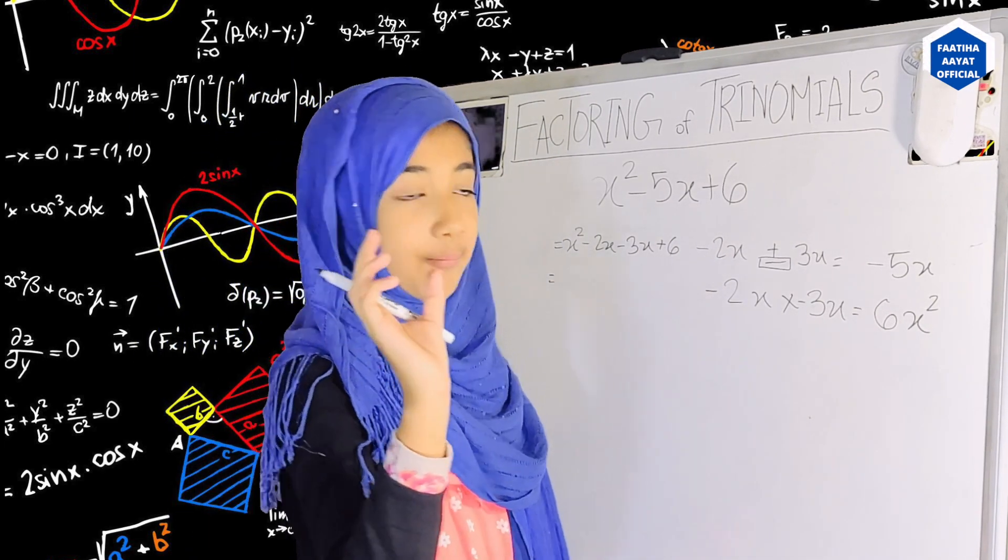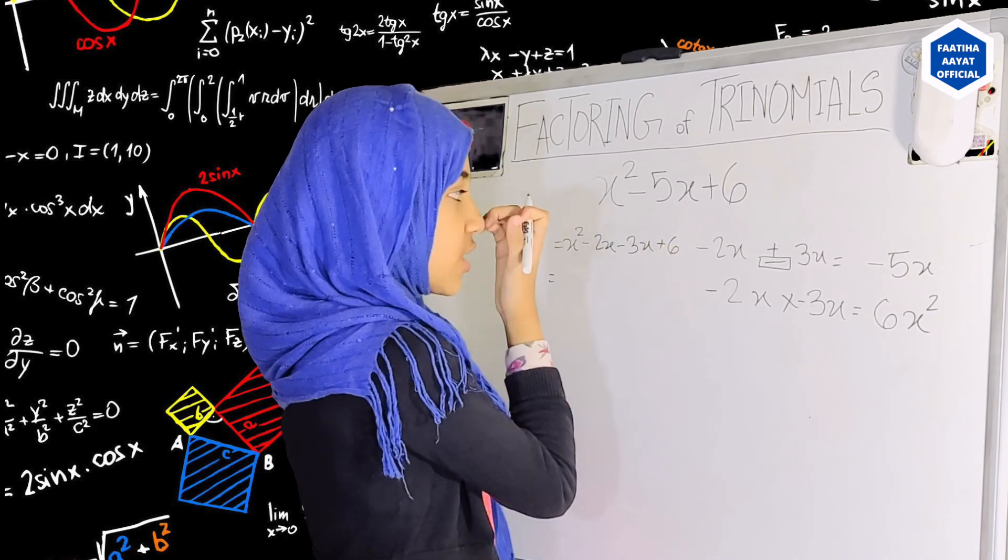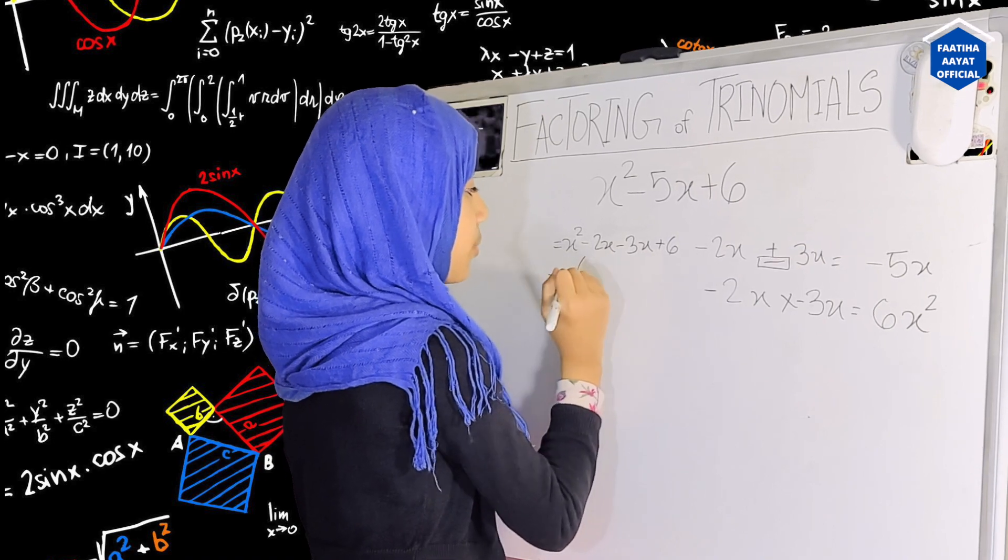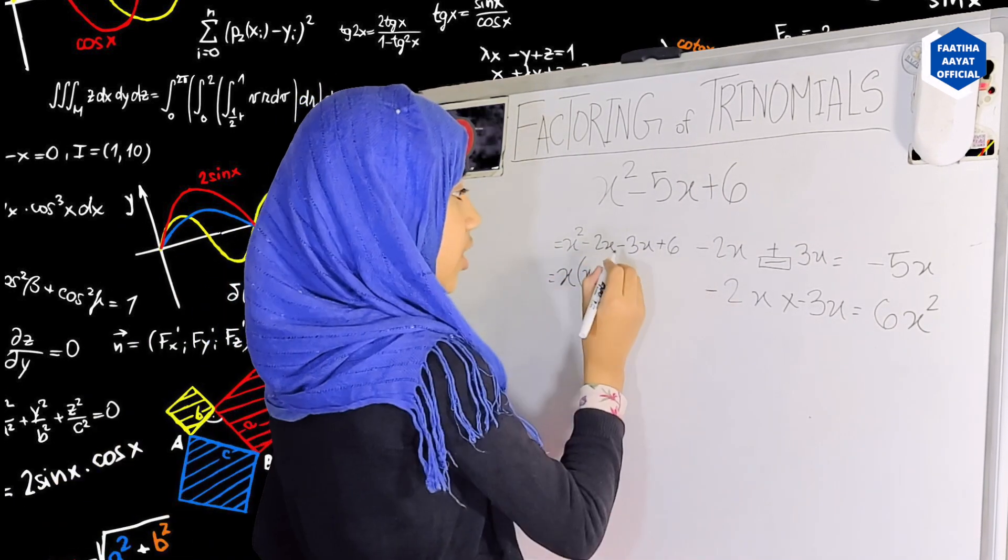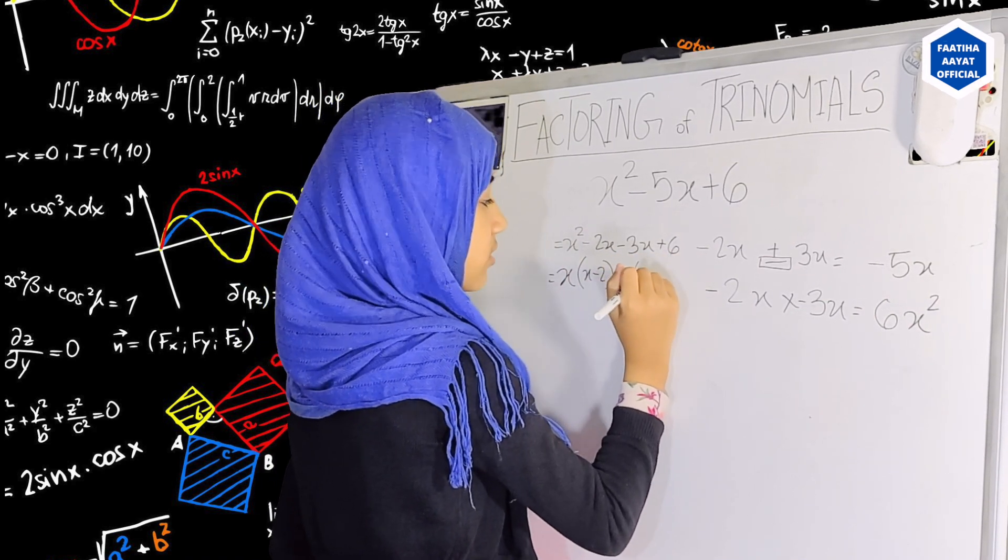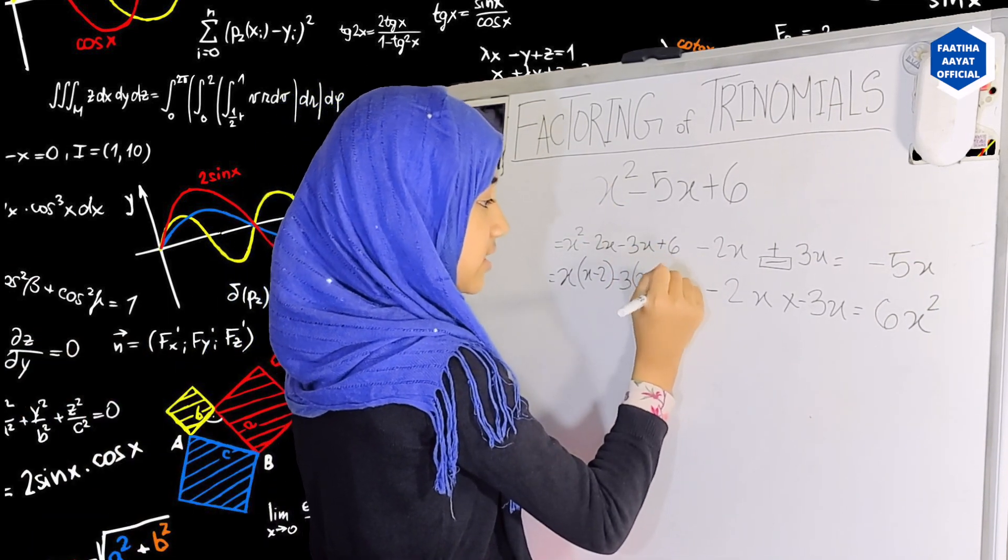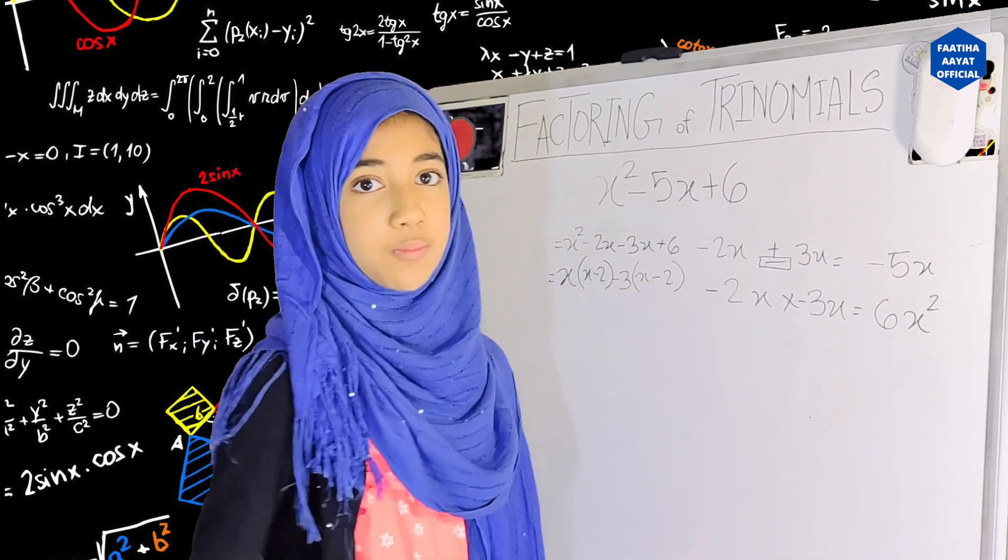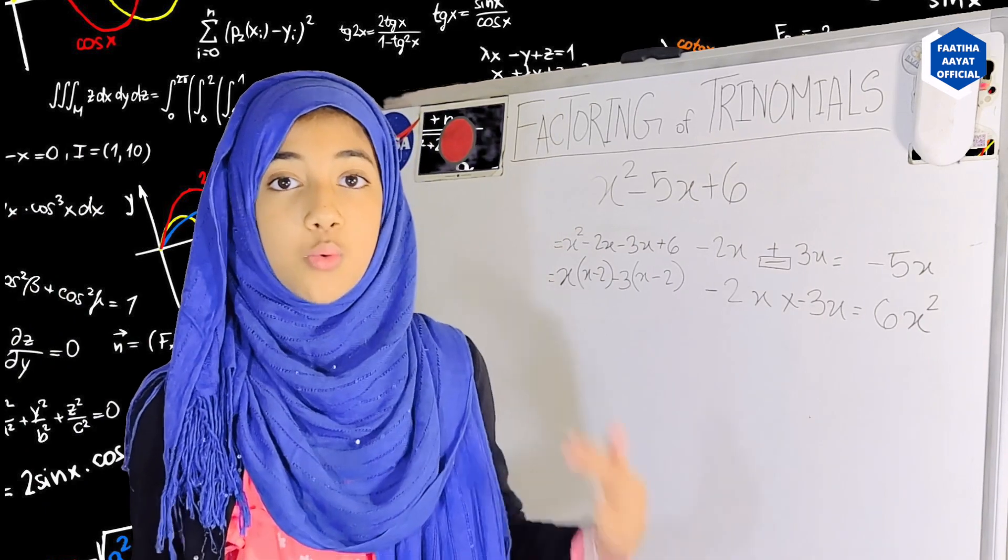Now what we are going to do is we are going to take common from these two numbers right here and then these two numbers right here. So first if we take common from these two we are going to take common x which will leave us with x minus 2. And the other one, so in these two we are going to take common minus 3. If we take common minus 3 what will be left of it will be x minus 2. Now we know that this is correct because whatever is inside these two parentheses, the numbers that are inside these two parentheses, they are the same. So when they are the same that means that whatever we are doing is going on correct while we are factoring trinomials.